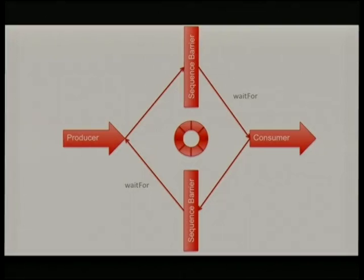That protection and happens-before semantics are really done outside of the ring buffer — it's done by sequence barriers. When you look in the code, you'll see that the ring buffer will create sequence barriers for you, so in a sense the ring buffer is still doing this. But we work quite hard to have a separation of concerns in the code, and that's one of the reasons it's quite fast — each thing has its own independent job, which reduces contention.